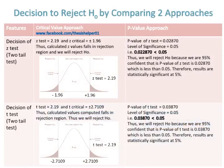Decision to reject H-naught by comparing both approaches — for the z-test two-tailed test: the z-test statistic equals 2.19 and z-critical is plus or minus 1.96, so the calculated z value falls in the rejection region and we reject H-naught. For the p-value approach, the p-value of the z-test is 0.02870, which is less than 0.05, so we reject H-naught because we are 95% confident. Therefore, results are statistically significant at five percent.